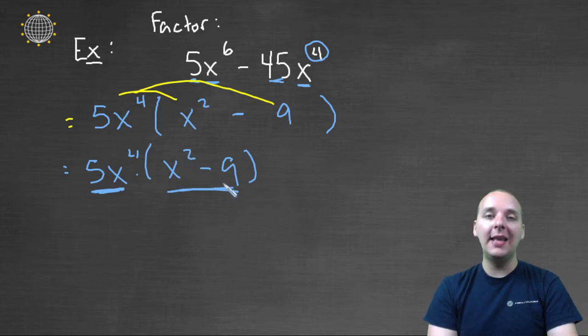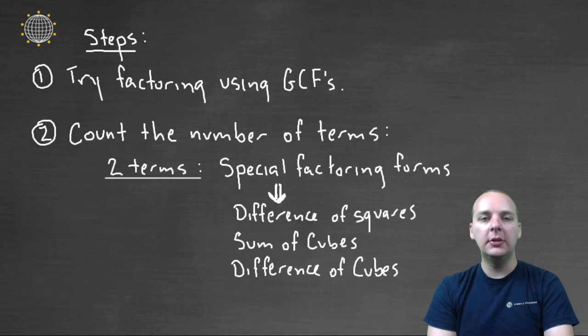But the x squared minus nine, that has two terms, so it might be a, let's see, a difference of squares. And in fact, I think that it is.